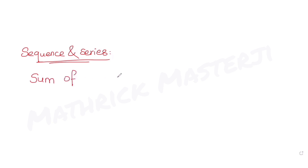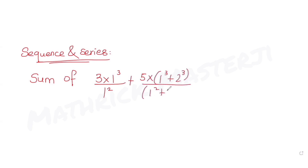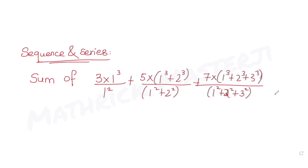The question tells us to find the sum of an expression: 3 into 1³ upon 1², plus 5 into (1³ + 2³) upon (1² + 2²), plus 7 into (1³ + 2³ + 3³) upon (1² + 2² + 3²). Likewise, then it will be 9, 11 and so on. We have to find this entire sum till 10 terms.